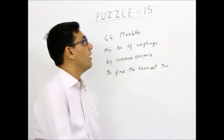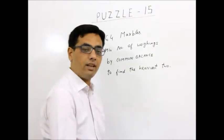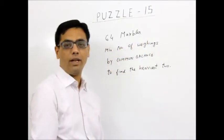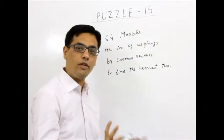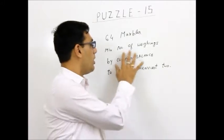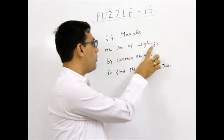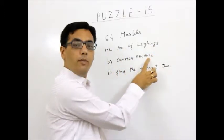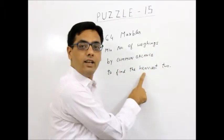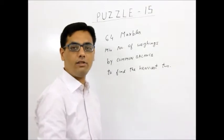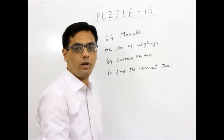Hello. I am back with puzzle number 15. There are 64 marbles which are all of different weight. You have got a common balance. The question is what is the minimum number of weighings required by a common balance to find the heaviest two marbles out of these 64 marbles.